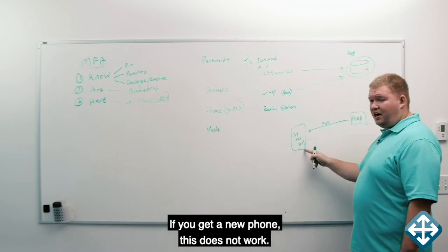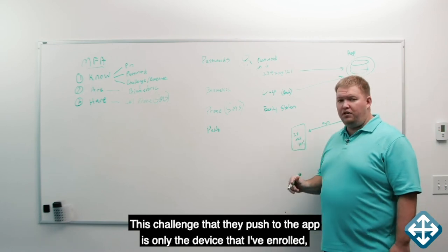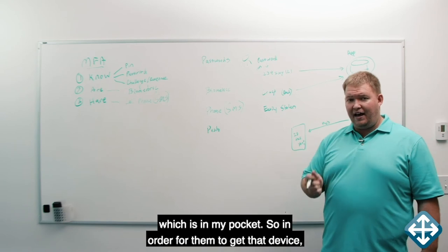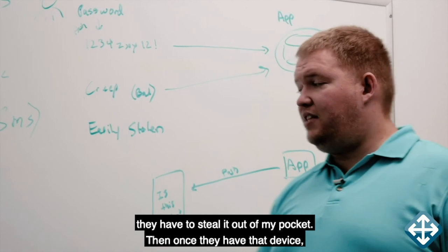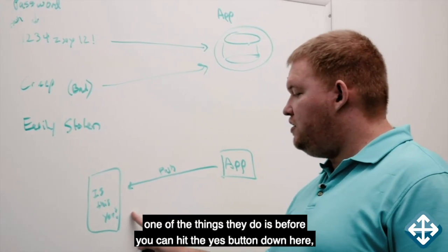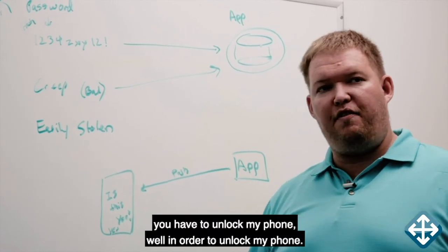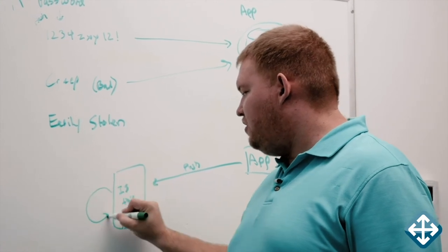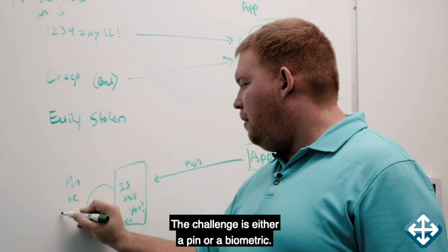If you get a new phone, this does not work. This challenge that they push to the app is only the device that I've enrolled, which is in my pocket. So in order for them to get that device, they have to steal it out of my pocket. Then once they have that device, a lot of these push notification applications, one of the things they do is before you can hit the yes button, you have to unlock my phone. Well, in order to unlock my phone, I have a secondary challenge within the phone. The challenge is either a pin or a biometric.